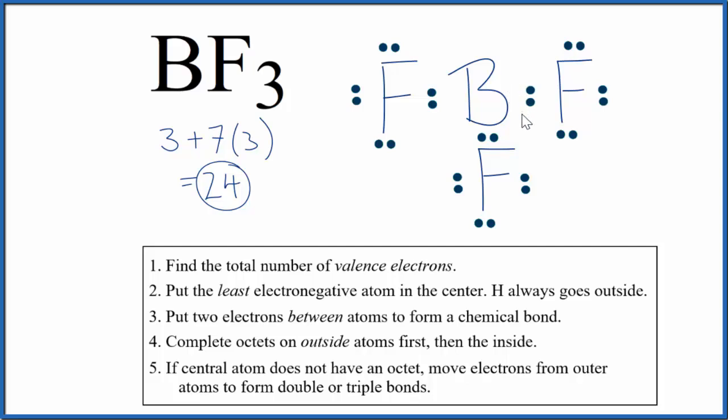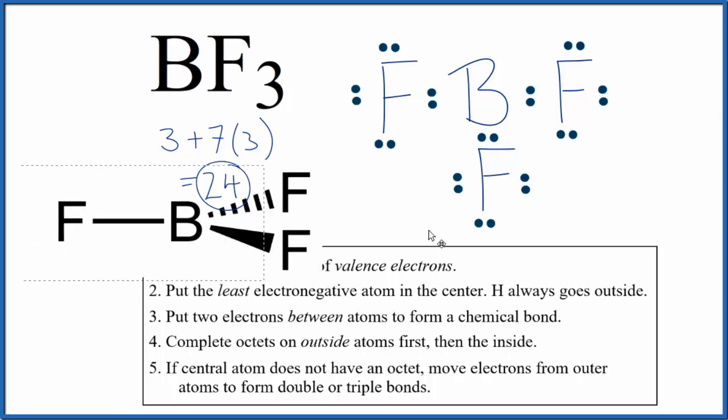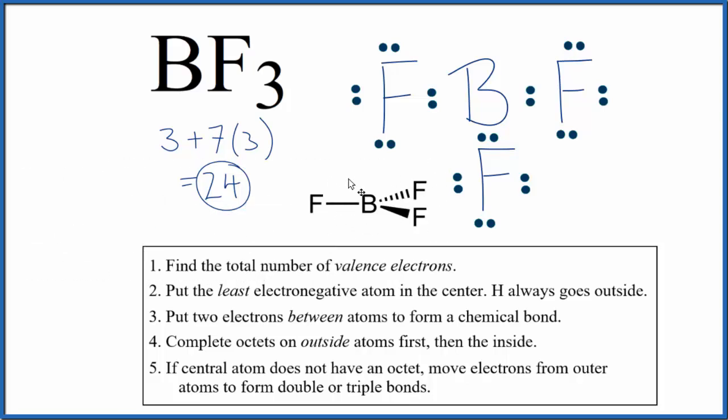If we wanted to talk about the molecular geometry, we'd end up with a trigonal planar molecular geometry because each of these fluorines, they'd push away from each other and spread out. And that would look like this. So you can see how the fluorines are all in the same plane. If you need help with the molecular geometry for BF3, there's a link at the end of this video.